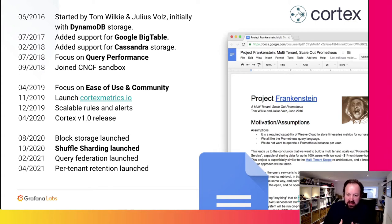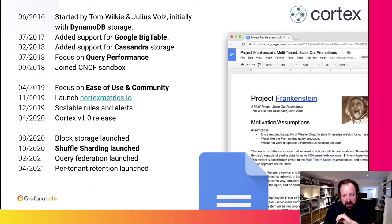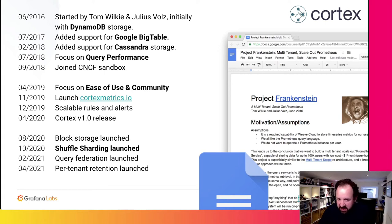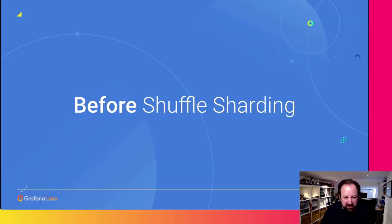Now, more recently in the past year or so, we've been focused on new and exciting features in Cortex. We added a system called block storage — basically the same thing Thanos does — where we've reduced Cortex's only dependency to an object store, making it a lot easier to deploy and manage. Block storage is also fantastically cheaper to operate than the previous DynamoDB chunk storage. We added shuffle sharding towards the end of last year, which is what I'm going to talk about for the rest of the talk. And then more recently we've added things like query federation, relaxing some of those multi-tenancy isolation features so you can query data in multiple different tenants, and per-tenant retention so different tenants can have different amounts of data stored for different lengths of time.